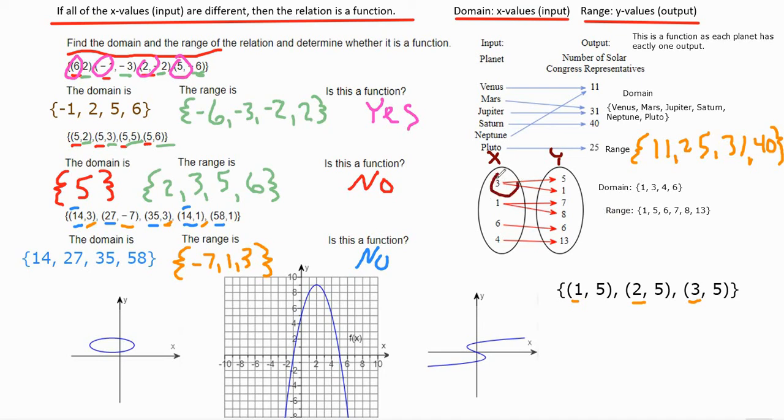And since the 3 goes to two different spots and the 1 goes to different spots, they repeat. So this is not a function. The x values go to two different things sometimes, the 3 and the 1.